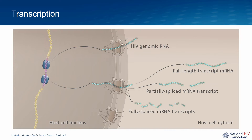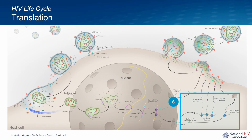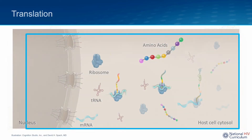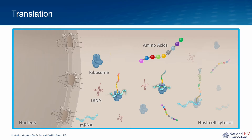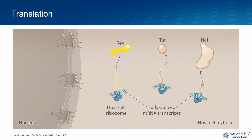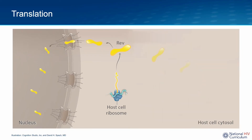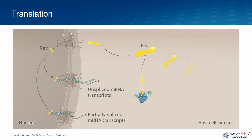HIV translation occurs in the cytoplasm and is the step where HIV mRNA is translated into 15 different HIV proteins. An extensive array of host cell translation machinery is utilized, including ribosomes, transfer RNAs, amino acids, and additional factors for initiation, elongation, and termination of protein synthesis. The fully spliced HIV RNA is often first to undergo translation, generating the HIV regulatory proteins REV and TAT, along with the HIV accessory protein NEF. Much of the REV synthesized rapidly migrates back into the host cell nucleus, where it enhances the export of partially spliced and unspliced HIV mRNA into the cytoplasm.